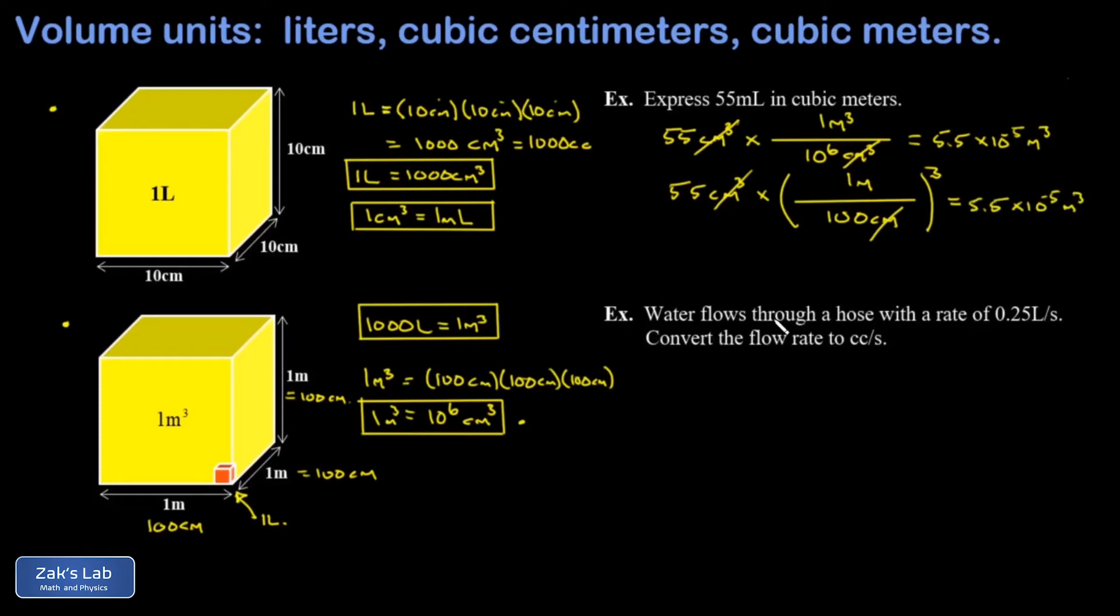In the second example, I'm told that water flows through a hose with a rate of 0.25 liters per second. I then want to convert the flow rate to cubic centimeters per second. So I need a conversion between liters and cubic centimeters. Well, we discovered that one liter is 1,000 cubic centimeters. So I take my 0.25 liters per second. And I multiply by a conversion factor that's going to cancel the unit that I want to cancel. So I put the liters in the denominator there. And one liter is 1,000 cubic centimeters, which you could also write as cc. So we bump the decimal place on the 0.25 three times, and I get 250. And my surviving units are cubic centimeters in the numerator, which I'll write as cc's now, and seconds in the denominator. So I get 250 cubic centimeters per second, and we're done.